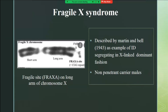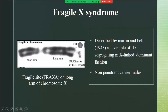Why is it called Fragile X? Initially when evaluating males with intellectual disability, only karyotyping and chromosomal staining were available. Under the microscope, the X chromosome in affected males showed a fragile site — a visible gap — on the long arm of the X chromosome. This was characteristically seen in all affected males with intellectual disability, so it was called Fragile X syndrome. It was described by Martin and Bell, and it was segregating in an X-linked dominant, semi-dominant fashion.